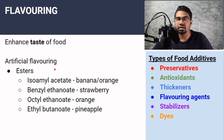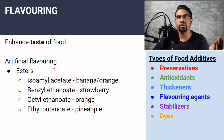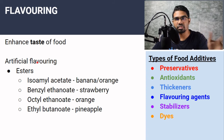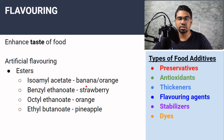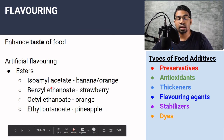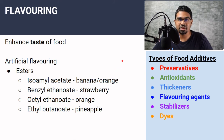Artificial flavoring is used to mimic natural flavoring, normally the flavor of fruits. These are commonly esters, which have a characteristic fruity smell. For example, isoamyl acetate produces banana or orange flavoring; benzyl ethanoate mimics strawberry; octyl ethanoate mimics orange; and ethyl butanoate mimics pineapple. These are commonly used in making fruity drinks and desserts that don't contain the actual fruit flavor itself.